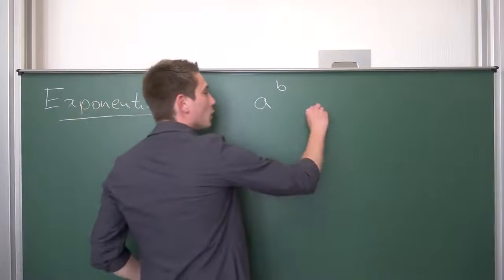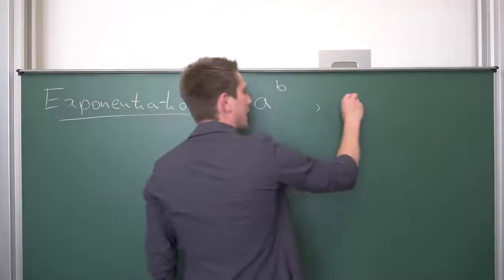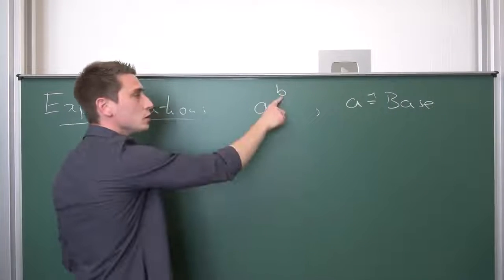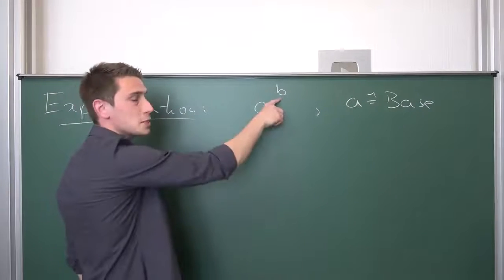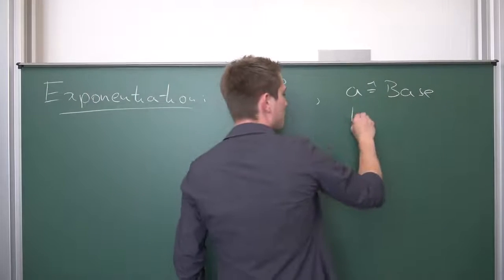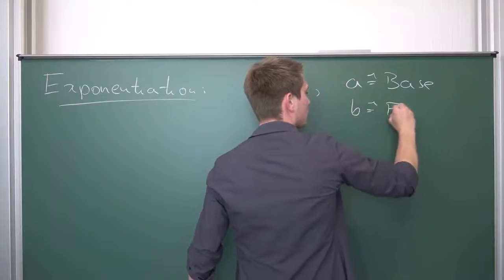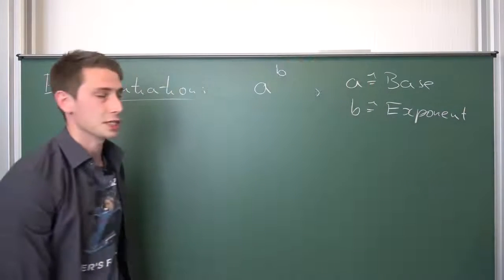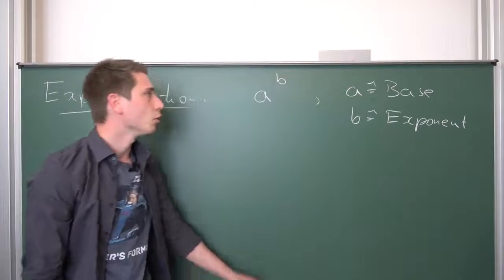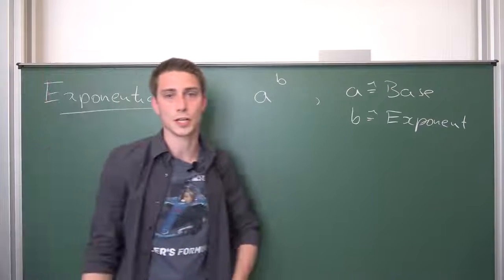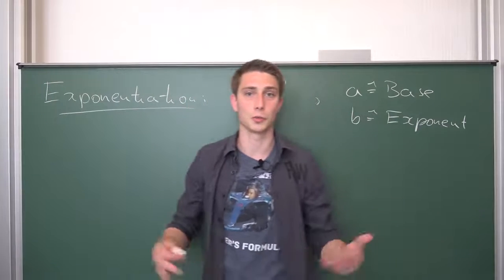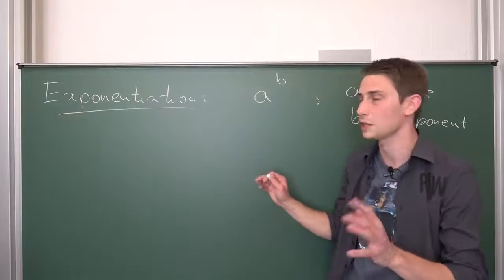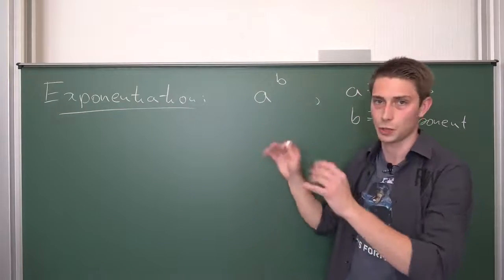Now, like I said before, we are raising a base. a is called the base to some power. But this power is also called the exponent. So b is called the exponent. Just a bit of terminology for you guys. It's important. And the whole thing is just called the exponentiation. In German it's called the potence. I don't know if there's something like potency in English. I'm not certain about that. I only know that it's called exponentiation in some way.